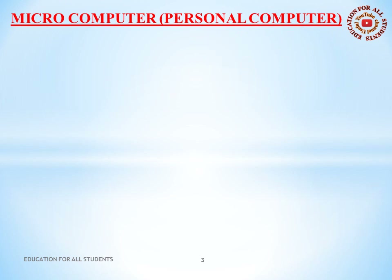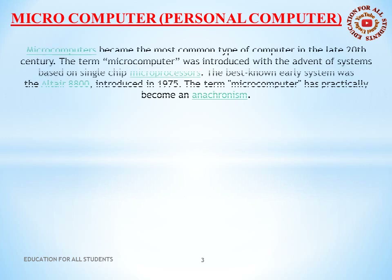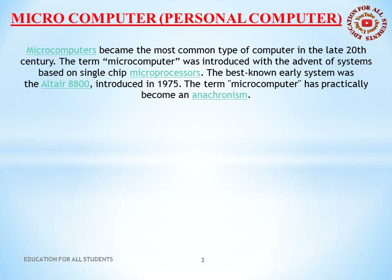The first title is microcomputer, also known as personal computer. We will look at the history, usage, and more. Microcomputers became the most common type of computer in the late 20th century. The term microcomputer was introduced with the advent of systems based on single-chip microprocessors. The best-known early system was the Altair 8800, introduced in 1975. Today the term microcomputer has practically become an anachronism.